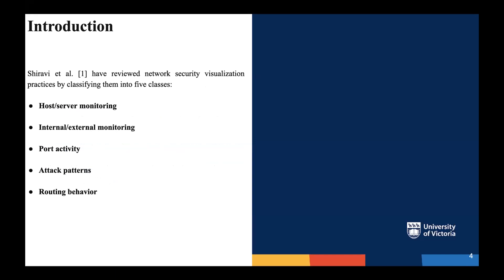Shira VAL reviewed all the network security visualization practices that were already developed in history by classifying them into five different classes: the first one is host and server monitoring, the second is internal external monitoring, the third is port activity, the fourth is the family of attack patterns, and then the routing behavior. Next we're going to talk about what each one of these visualization classes are focusing on.